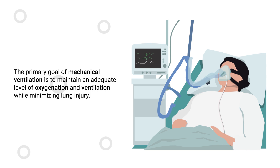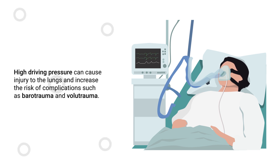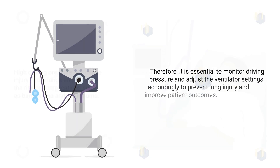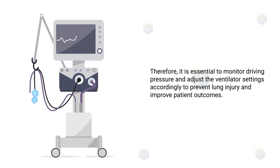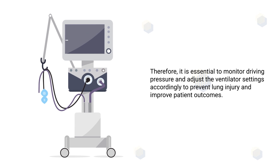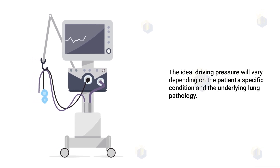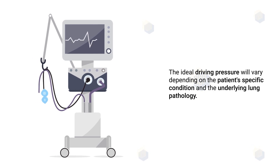The primary goal of mechanical ventilation is to maintain an adequate level of oxygenation and ventilation while minimizing lung injury. A high driving pressure can cause injury to the lungs and increase the risk of complications such as barotrauma and volutrauma. Therefore, it is essential to monitor driving pressure and adjust the ventilator settings accordingly to prevent lung injury and improve patient outcomes.